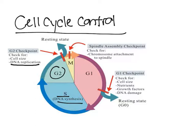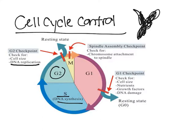There's another checkpoint at the M phase, or mitosis checkpoint. This is a checkpoint to see if spindles are aligned correctly to chromosomes. It checks to see if spindles are aligned properly with the chromosome, and if not, mitosis will not continue.